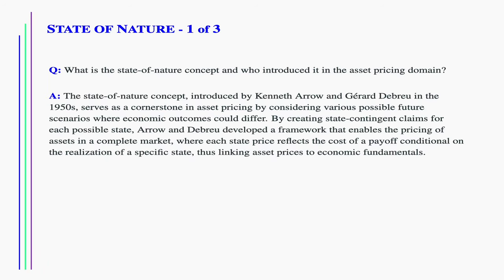Now, I would suggest we move to the next topic on state of nature. What is the state of nature concept and who introduced it in the asset pricing domain? The state of nature concept, introduced by Kenneth Arrow and Gerard Debreu in the 1950s, serves as a cornerstone in asset pricing by considering various possible future scenarios where economic outcomes could differ. By creating state-contingent claims for each possible state, Arrow and Debreu developed a framework that enables the pricing of assets in a complete market, where each state price reflects the cost of a payoff conditional on the realization of a specific state, thus linking asset prices to economic fundamentals.